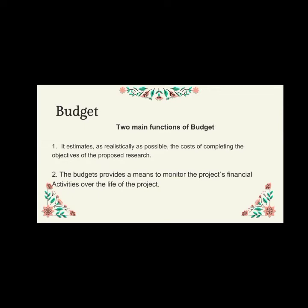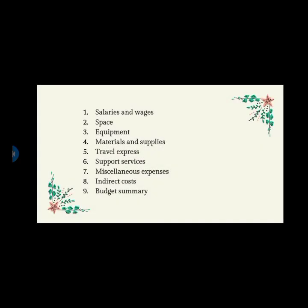For example, an exploratory study typically requires a relatively greater amount of time for data analysis than does a more focused study where the researcher has a better-defined notion of what he or she is examining. A typical budget will usually contain at least the following items. First, salaries and wages — personal costs are determined by translating time and staffing into appropriate salaries and wages, usually including fringe benefits and the cost of any contractual services such as consultant fees. Second, space — itemized here are the costs, if any, of providing space for the project, such as the rental of an office.